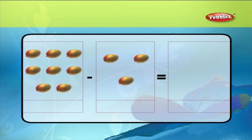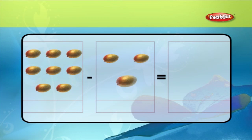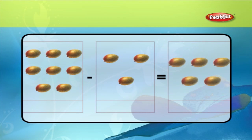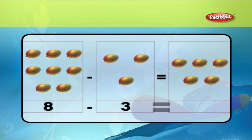Eight mangoes minus three mangoes is equal to five mangoes. We write it as eight minus three is equal to five.